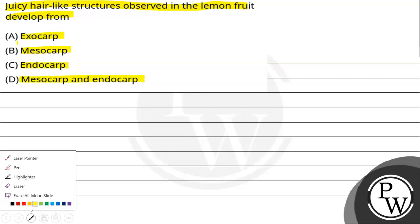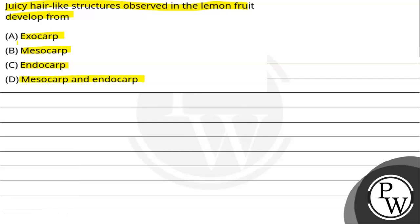The question is asking which part contains the hair-like structures found in lemon. So the key concept here is lemon. Lemon आता है हमारा monocarpillary syncarpus ovary के category में, जिसमें हमारे पास सिर्फ single carpel होता है.